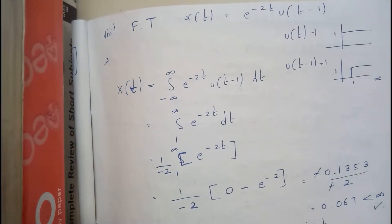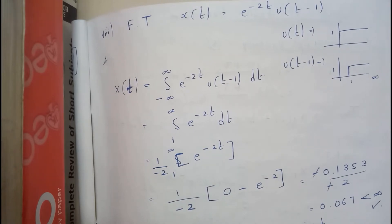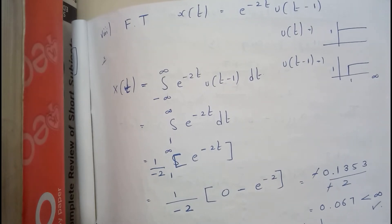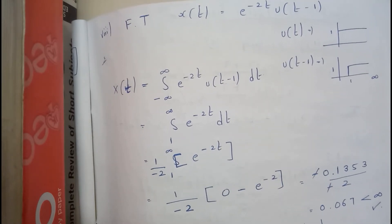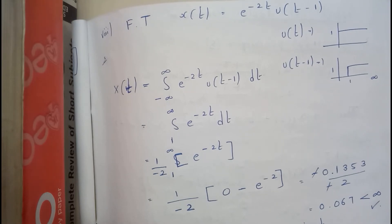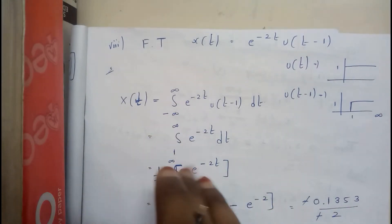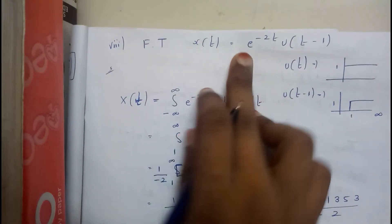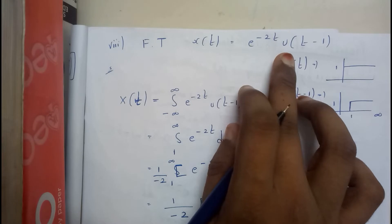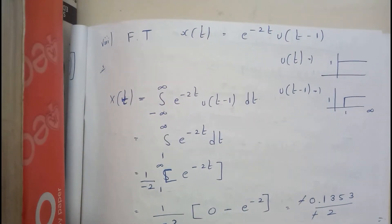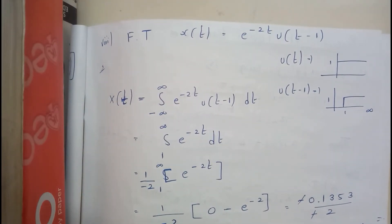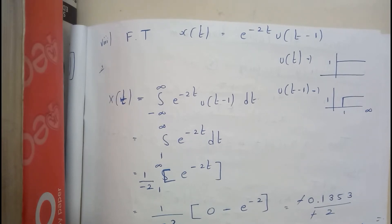I hope everyone is now 100% clear with this problem. This will be the last problem for Fourier transform basics. In the next tutorial we will go through properties — I will be covering 7 to 8 properties of Fourier transform. Now let us look at: Fourier transform of x(t) = e^(-t) u(t-2). We have seen u(t), u(-t), and now u(t-1) — these are quite varied questions.